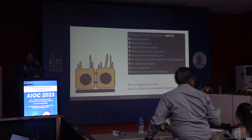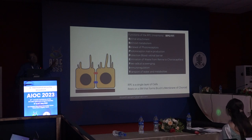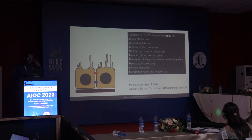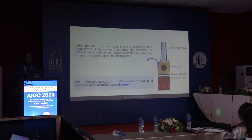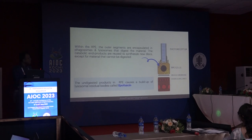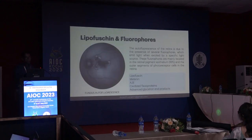R for retinal pigment epithelium. These are the functions you need to know for exams — remember them with the mnemonic RPE FIT. Importantly, phagocytosis of photoreceptor outer segments occurs at the RPE. The outer segments are phagocytosed, accumulate as lysosomes in the RPE, and these lysosomes are washed away by the choriocapillaries. This is how lipofuscin starts accumulating in the retina. When we do autofluorescence, we see fluorophores deposited there — the key fluorophores are lipofuscin, melanin, A2E, and oxidized flavoproteins.